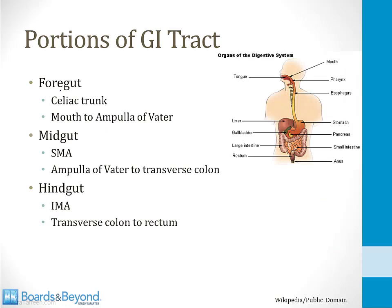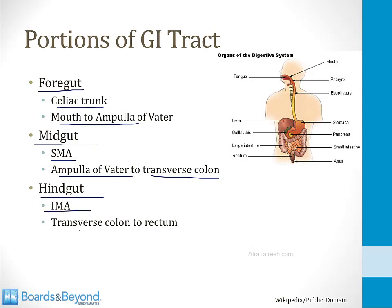The foregut gives rise to everything supplied by the celiac trunk — all structures from the mouth to the ampulla of Vater. The midgut gives rise to everything supplied by the superior mesenteric artery, from the ampulla of Vater to the transverse colon. The hindgut gives rise to everything supplied by the inferior mesenteric artery, from the transverse colon to the rectum.